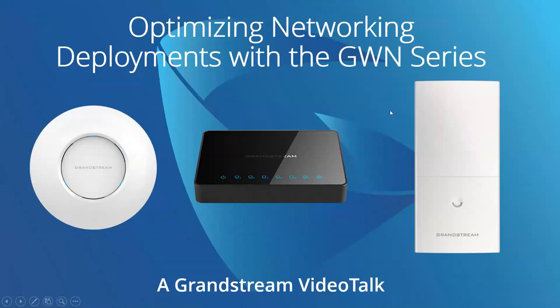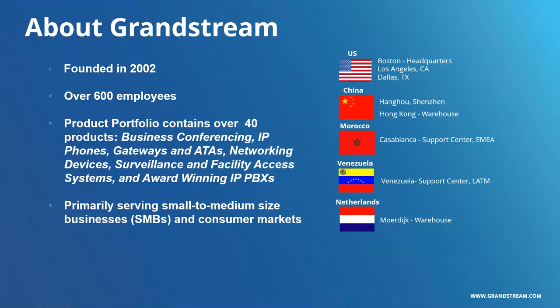Today we're talking about optimizing networking deployments with the GWN series. Grandstream was founded in 2002, with over 600 employees. We have a full product portfolio containing everything from business conferencing to IP phones, gateways, ATAs, IPBXs, and full UC networking options. We primarily serve small to medium-sized businesses in consumer markets, and we're globally located with offices in the U.S., China, Morocco, Venezuela, and the Netherlands.